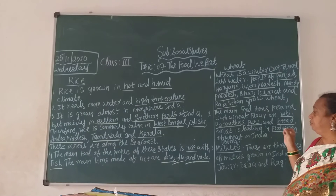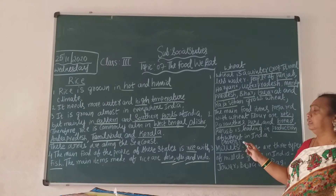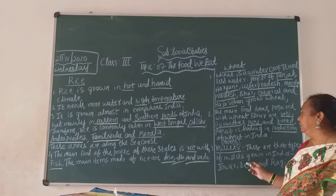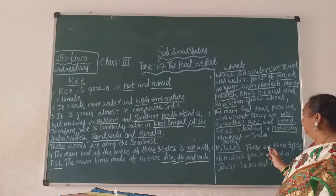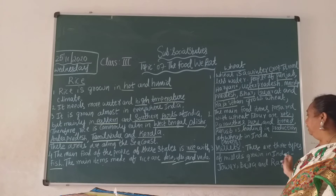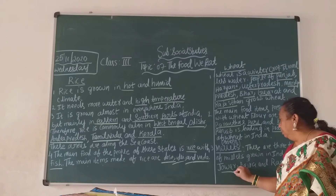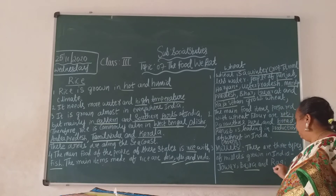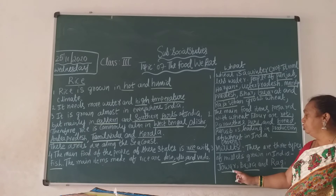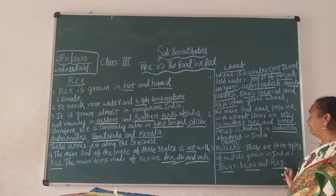Now, up to the millets. Millets means siridhanya — in Kannada what you call, children? Siridhanya. There are three types of millets growing in India: Jowar, Bajra and Ragi. Which are the millets, children? Jowar, Bajra and Ragi.